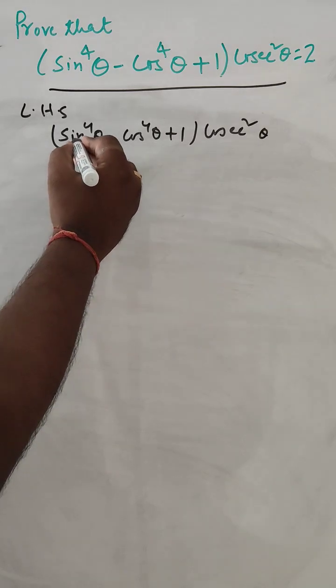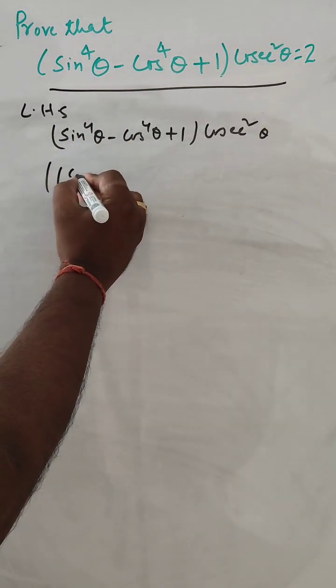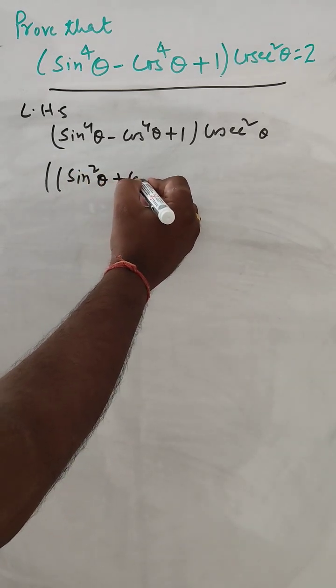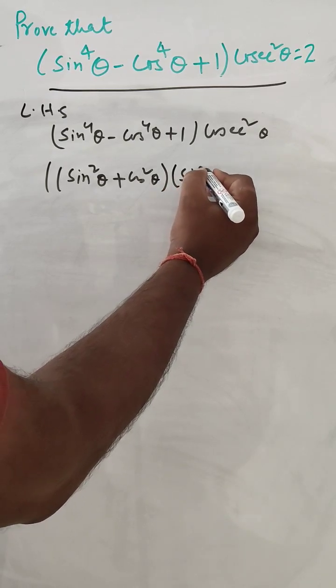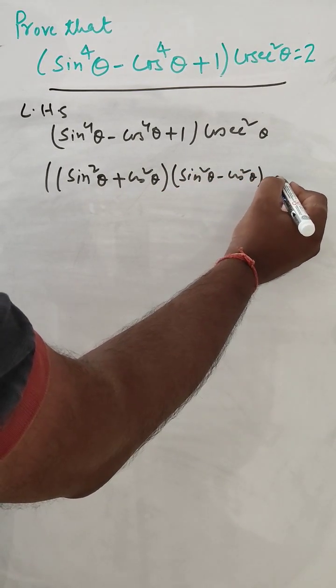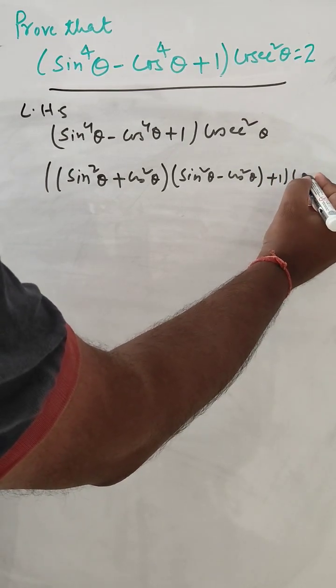And this A square minus B square formula we can expand this. So into that sin to the power 2 plus cos square theta and sin square theta minus cos square theta plus 1 and here cos square theta.